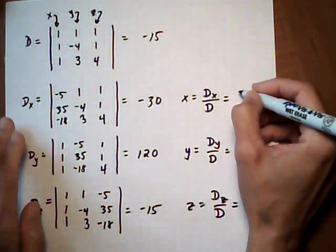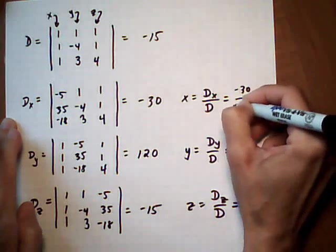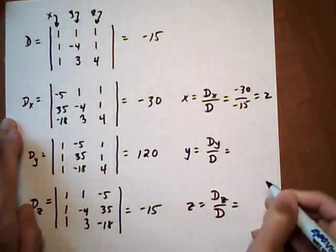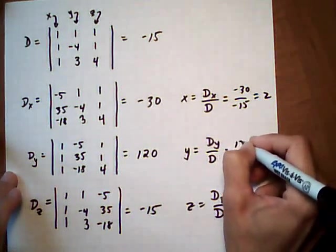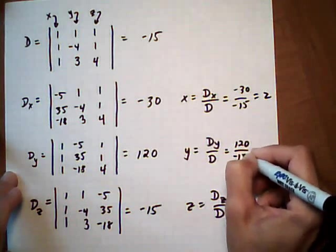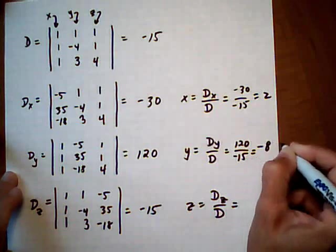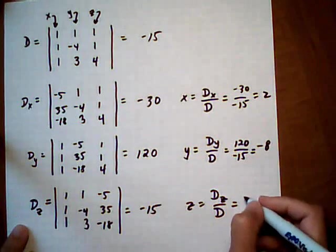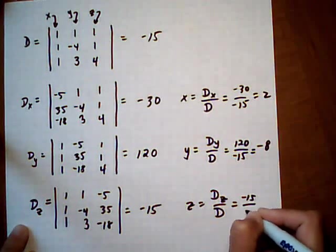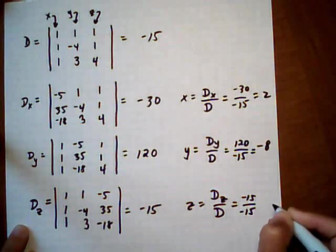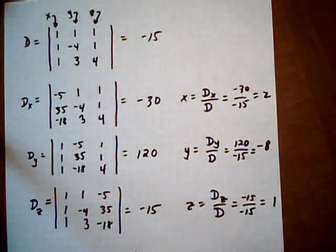Alright, so x is going to be minus 30 over minus 15, or 2. y is going to be 120 over minus 15, which is negative 8. And z is going to be negative 15 over negative 15. So z is equal to 1. So our solution is 2, minus 8, 1.